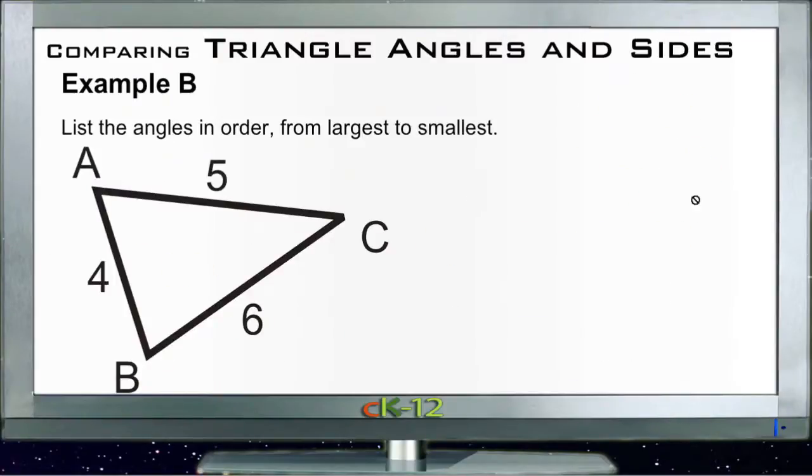Let's take a look at example B. Example B says list the angles in order from largest to smallest. Similar to the last question, our smaller angles are smaller sides. Since AB is our smallest side, that tells us that angle C is our smallest angle. Then side AC is our middle side or side 2, so that would be opposite angle 2. And then side BC is our longest side, so it's side 3, and that means that angle A is angle 3.